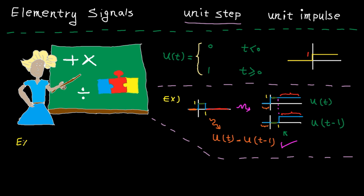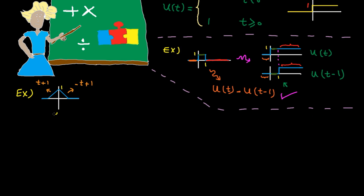Next example. This signal is given between minus 1 and 0; the line equation is t plus 1, and between 0 and 1 the line equation is minus t plus 1. Again, we want to express this signal in terms of unit step.